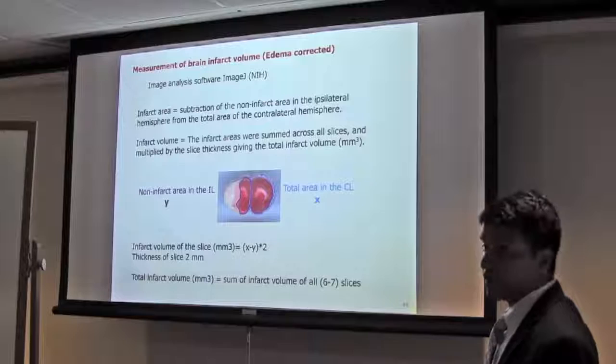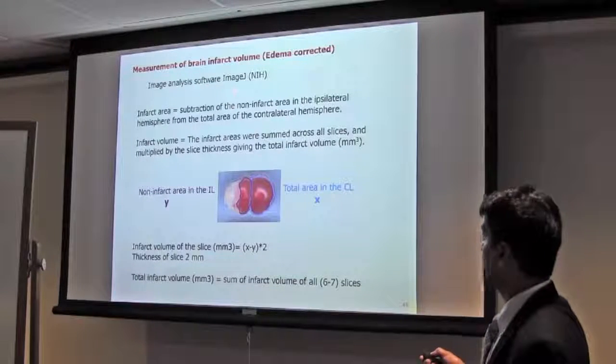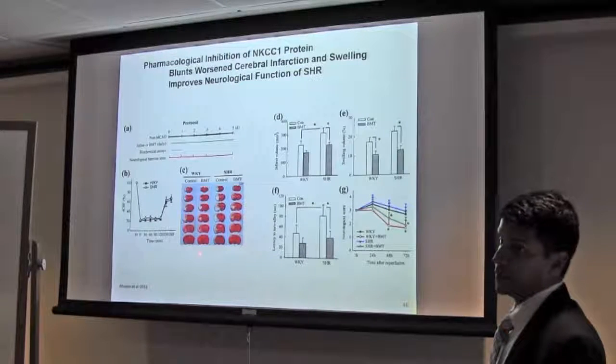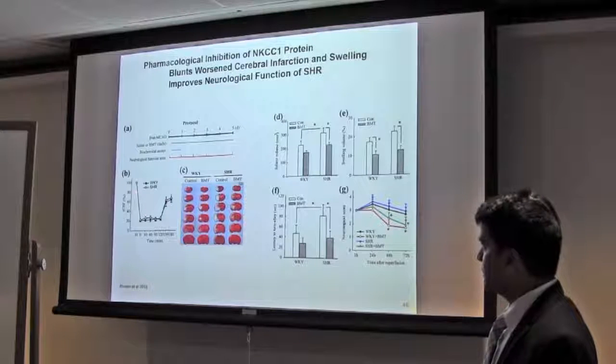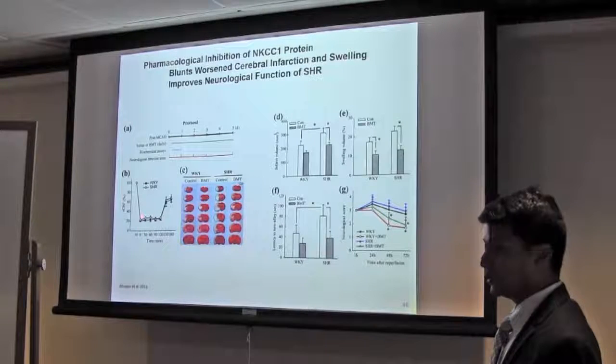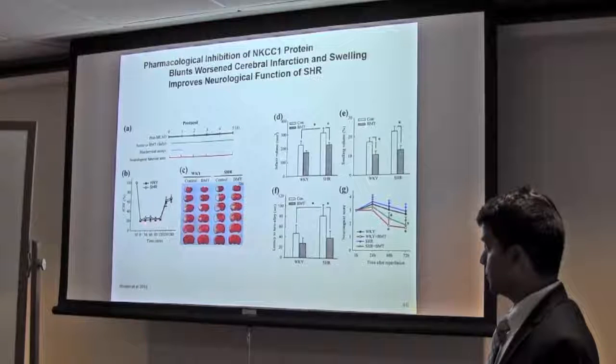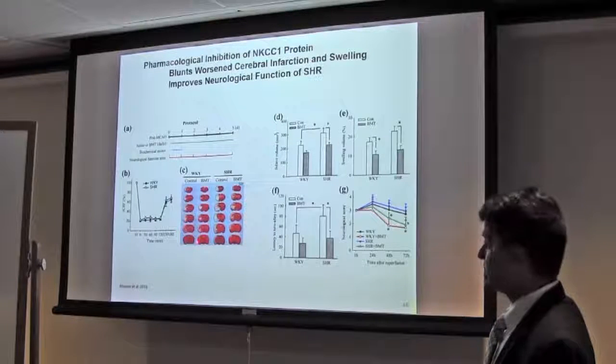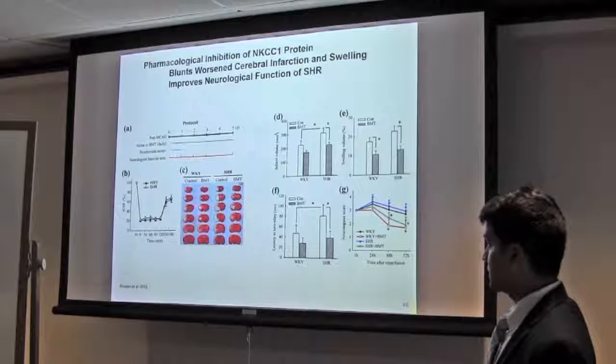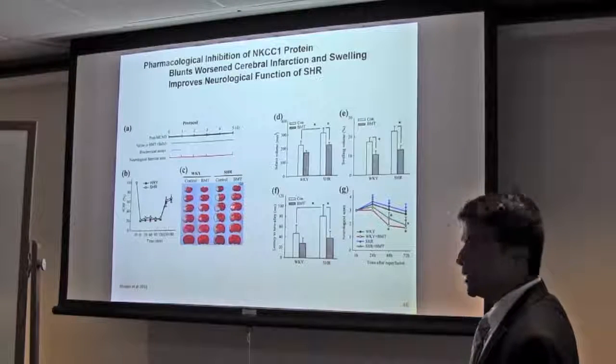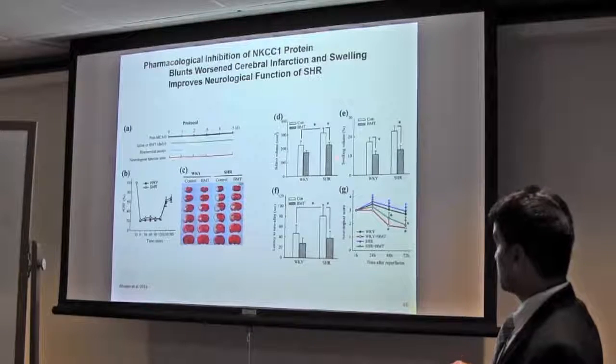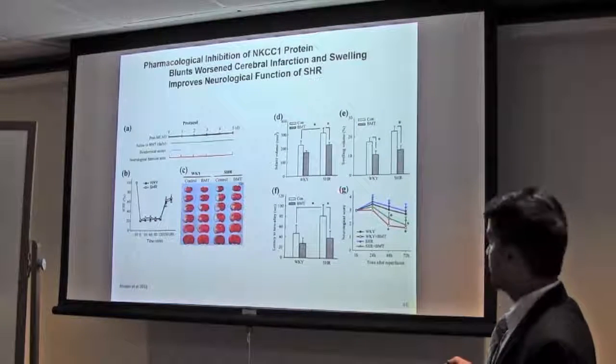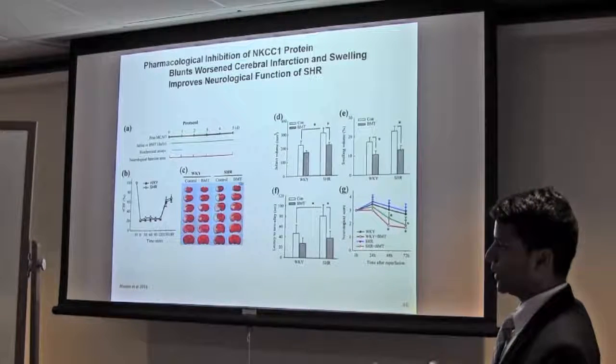You can measure how much infarction or swelling occurred by this simple equation, with the help of image analyzer like ImageJ software, which is free. This is an example of how we report this when we use this model. We show that the regional cerebral blood flow is getting down when we do the MCAO, and it remains during the occlusion, and with reperfusion, it came back again to normal. We report how the staining looks like in different conditions - this is one kind of drug we treated. When we apply the drug, the infarction is less. We can show by quantitative analysis for the infarction volume, swelling volume (which is a kind of edema measurement), and we show what is the neurological score after ischemia one day or two days.